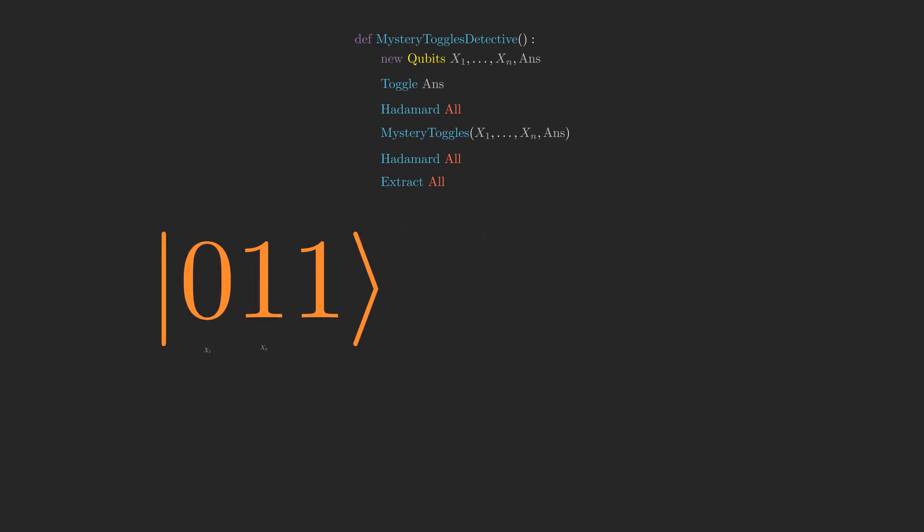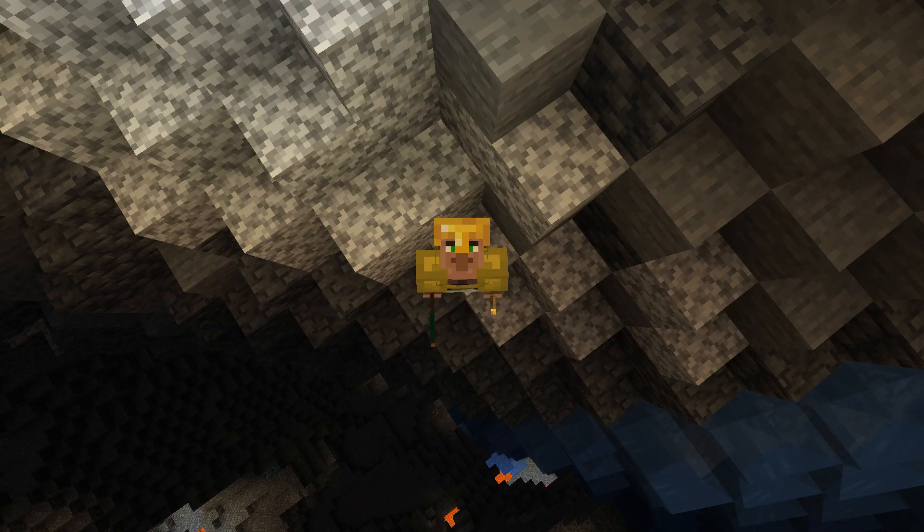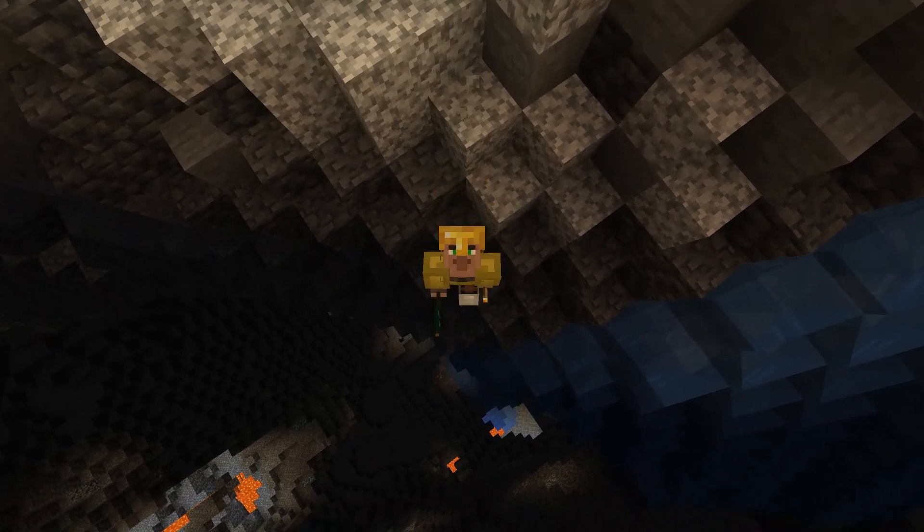We ended last time with a simulation of this algorithm doing its work with a specific instance of Mystery Toggles for n, the number of x's, equals 2. But in general, to prove that Mystery Toggles Detective works for all n, we need a mathematical proof, so let's dive in.